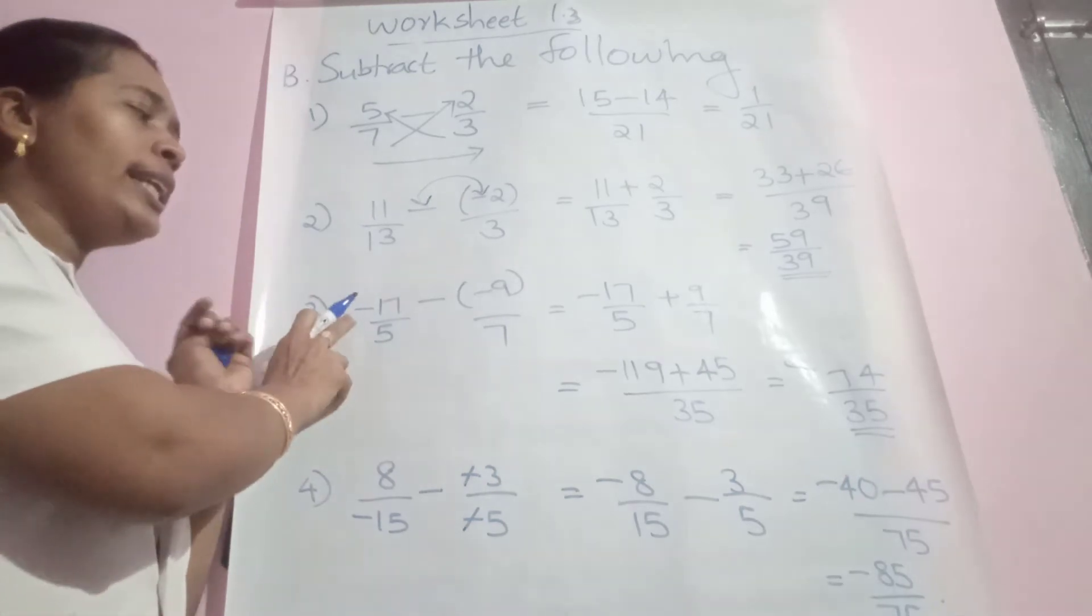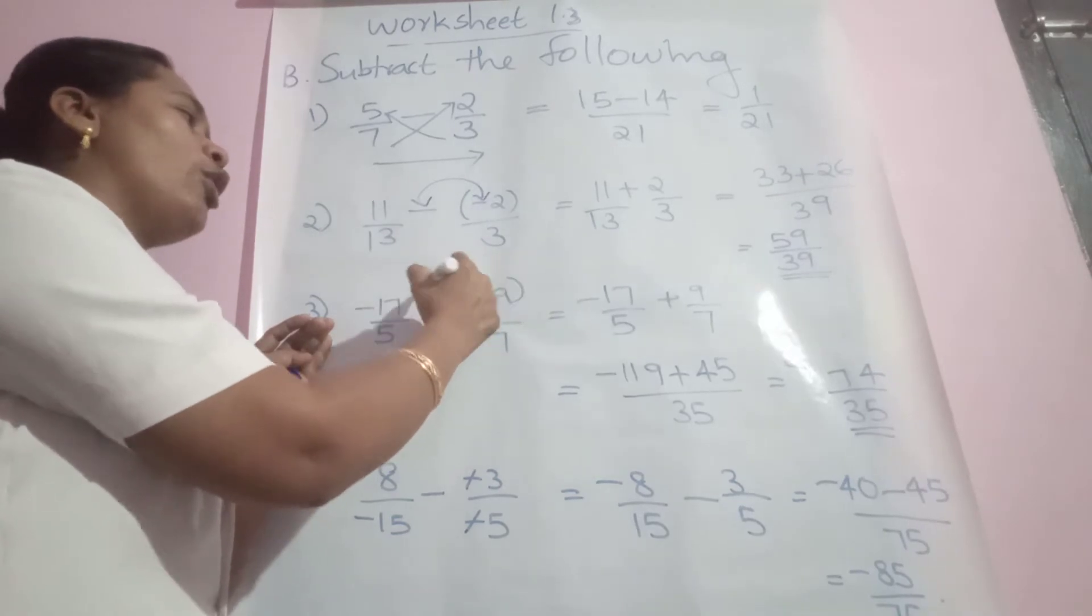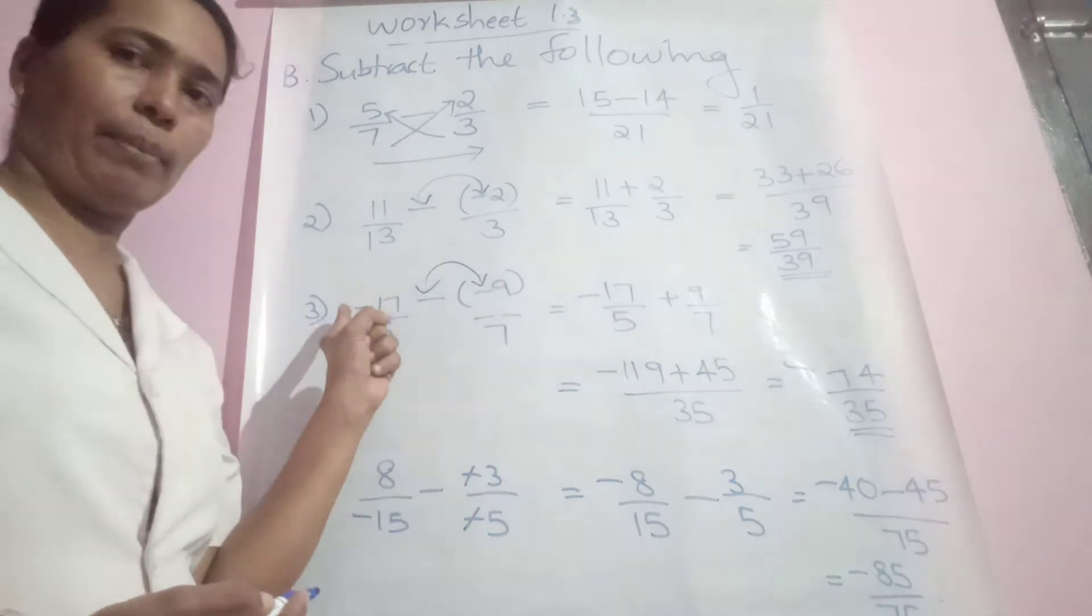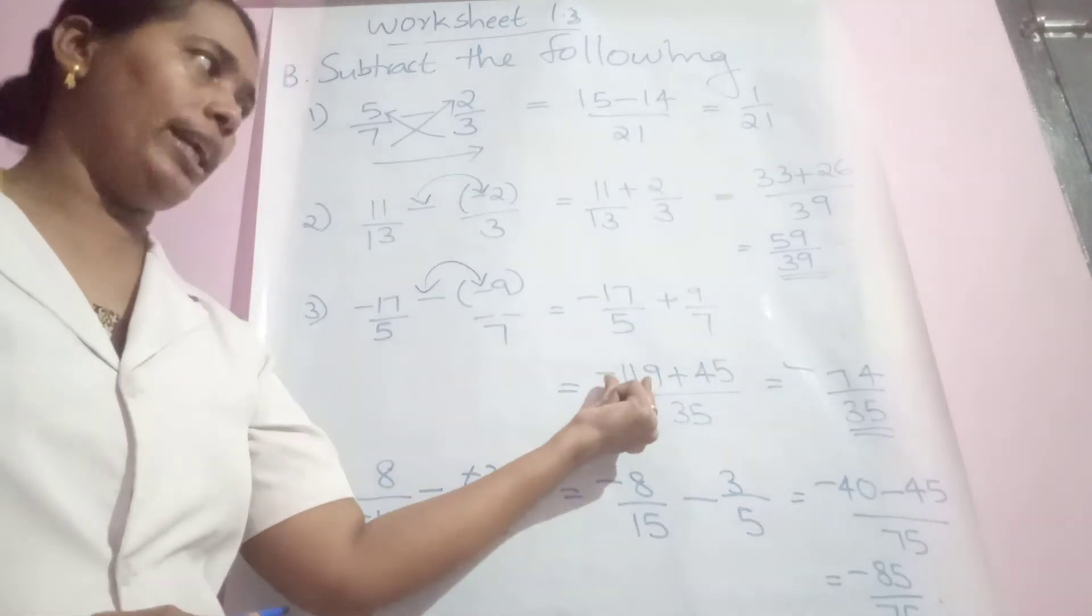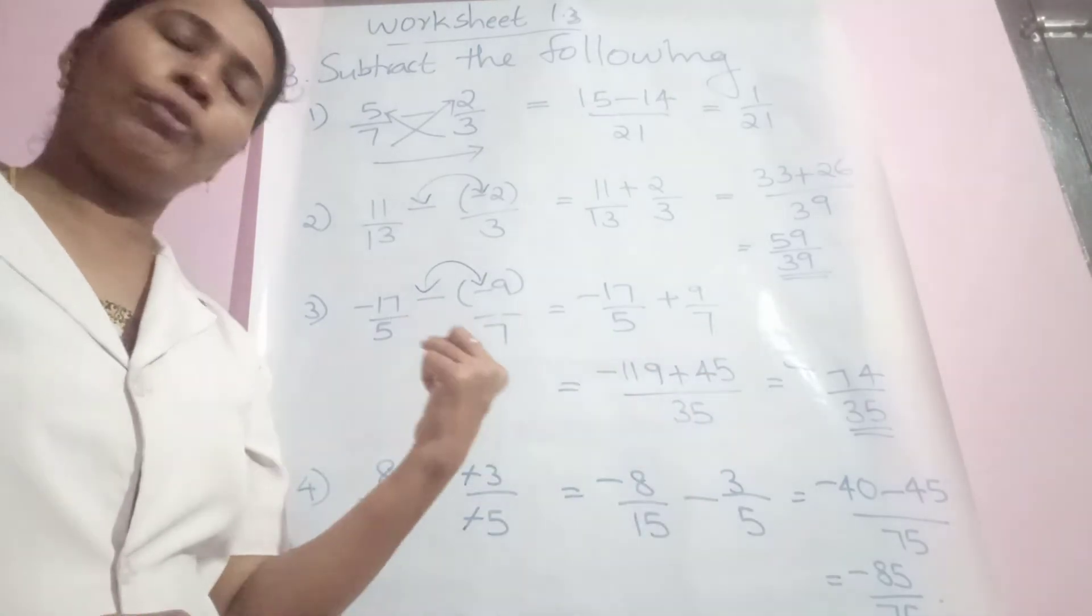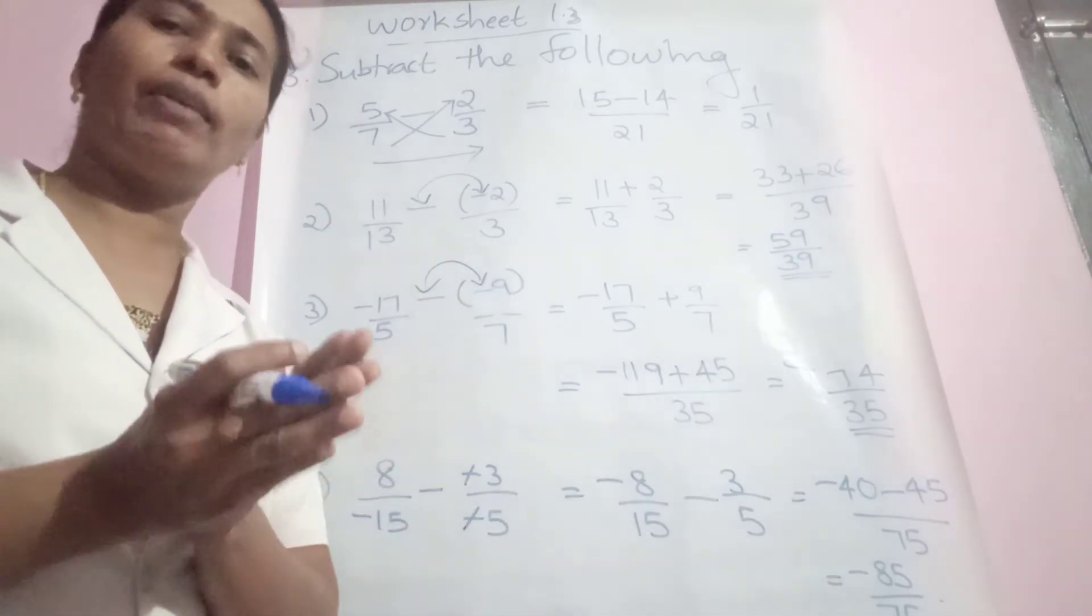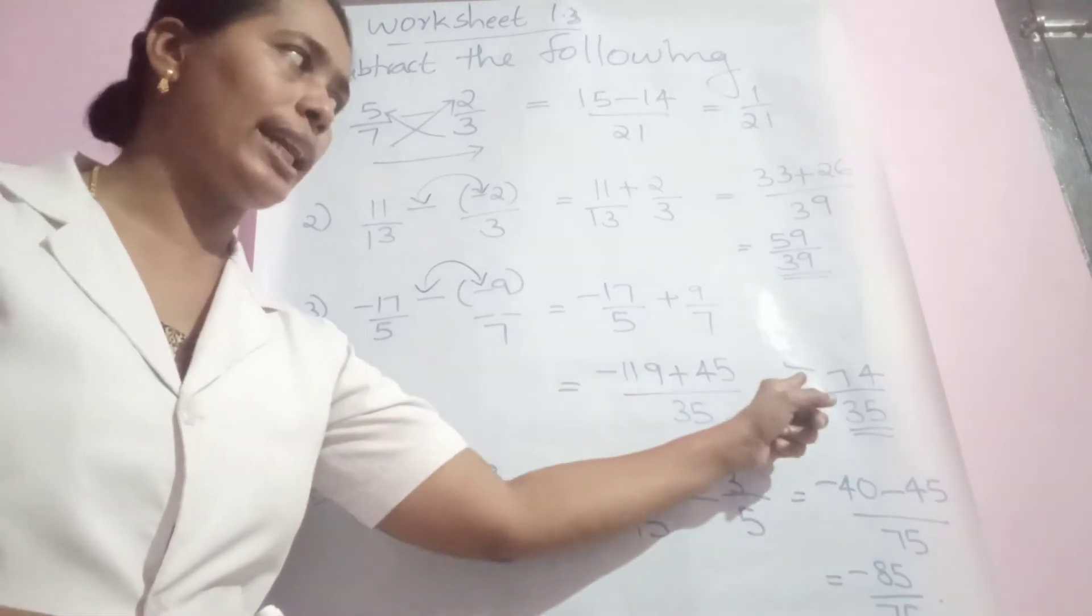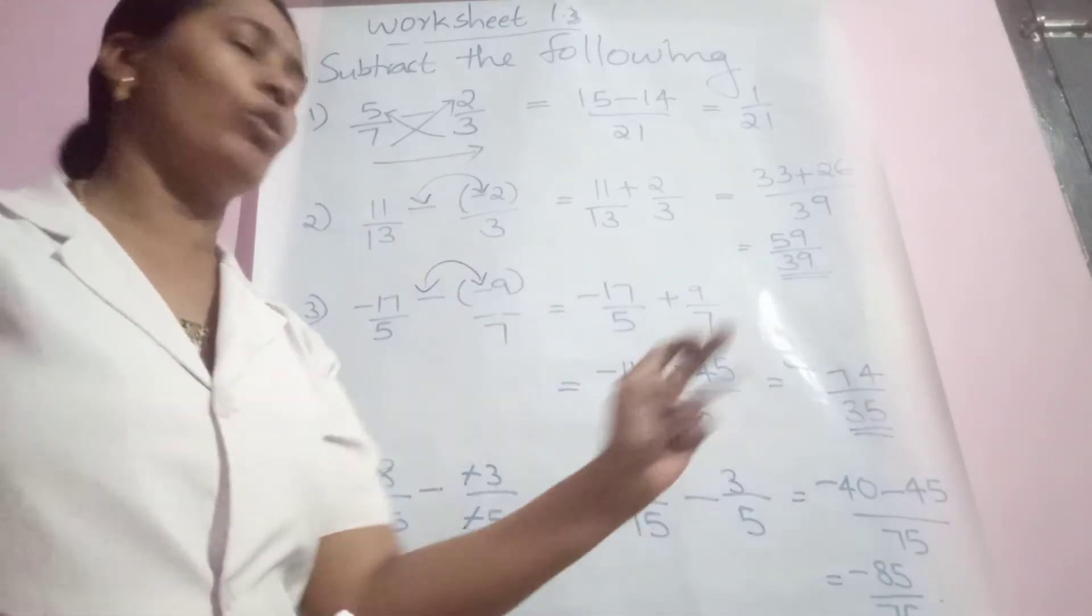Negative 17/5 minus of minus 9 becomes plus 9. But there is a negative sign for the first number. Now cross multiply: negative 17 into 1 is negative 119, 5 into 9 is plus 45, by 5 times 7 is 35. One is negative, one is positive, so addition not possible. What we have to do? Subtraction with the big number sign. The difference is 74, so minus 74/35.